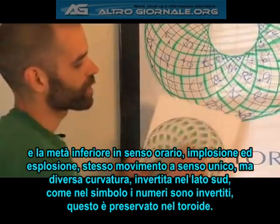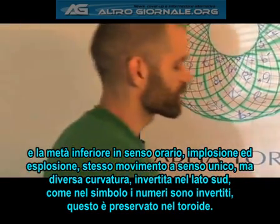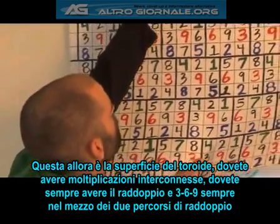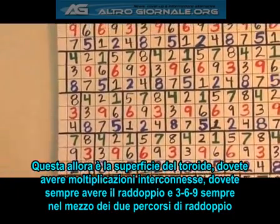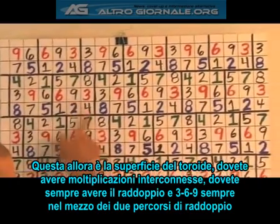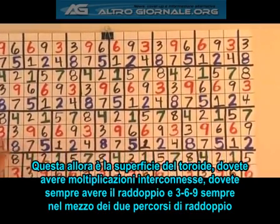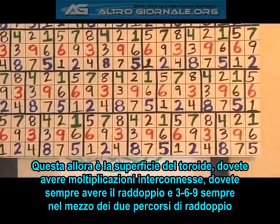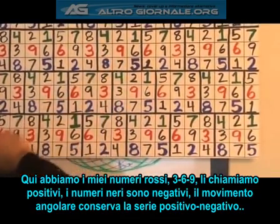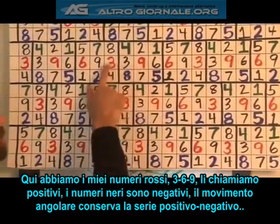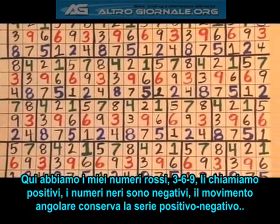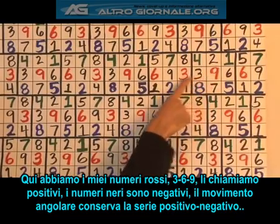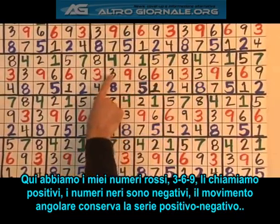Just like in my symbol, when my number is inverted, that is preserved in the torus. This is the torus skin. It's composed — you have to have interlocking multiplication tables. This is just with my control as one. You always have to have doubling, and you always want this 3, 9, 6 to be in between your two pathways of doubling. My red 9s, 3s, and 6s we're going to say are positive; my black ones are negative. Notice if I'm moving at an angle, I'm preserving positive, negative, positive, negative — binary flip-flop.